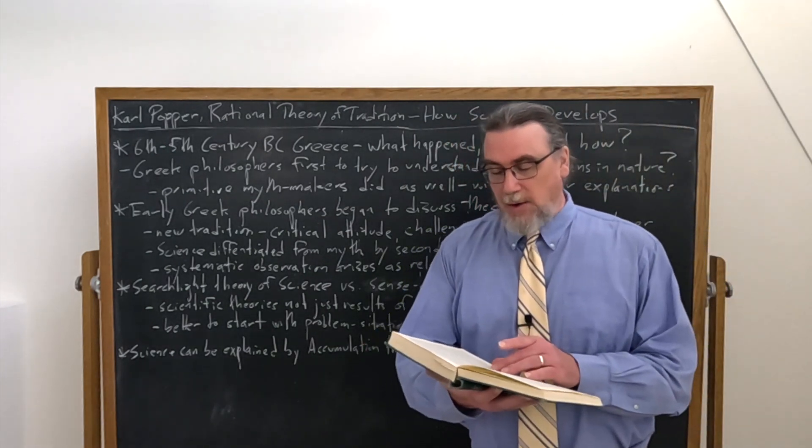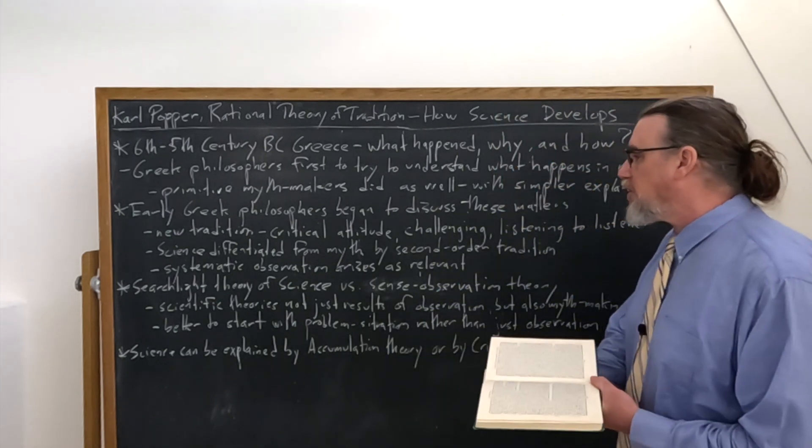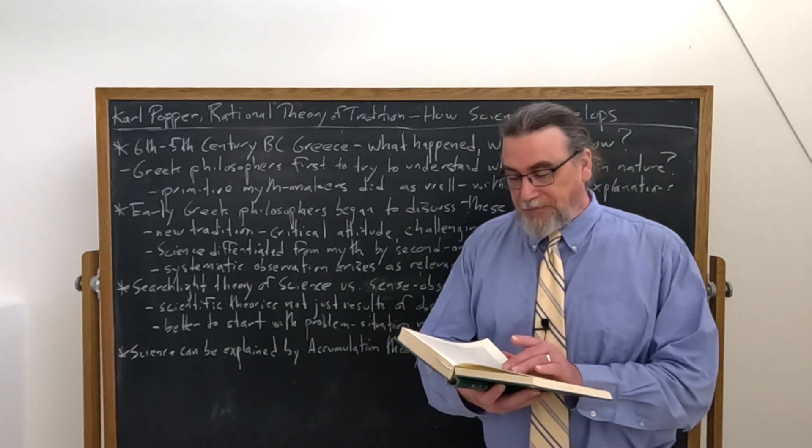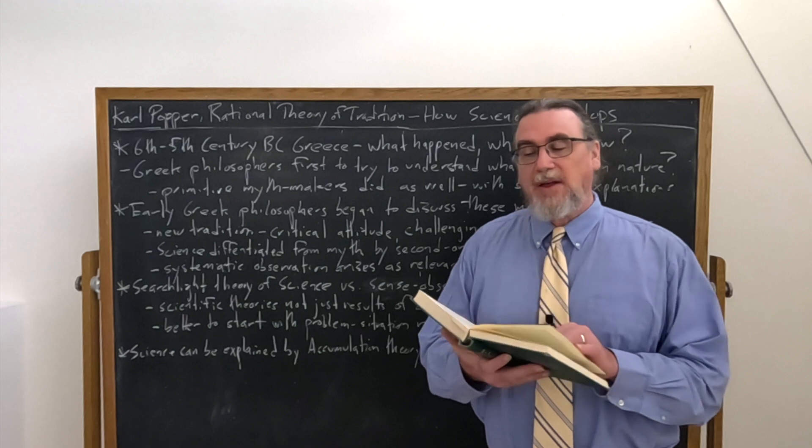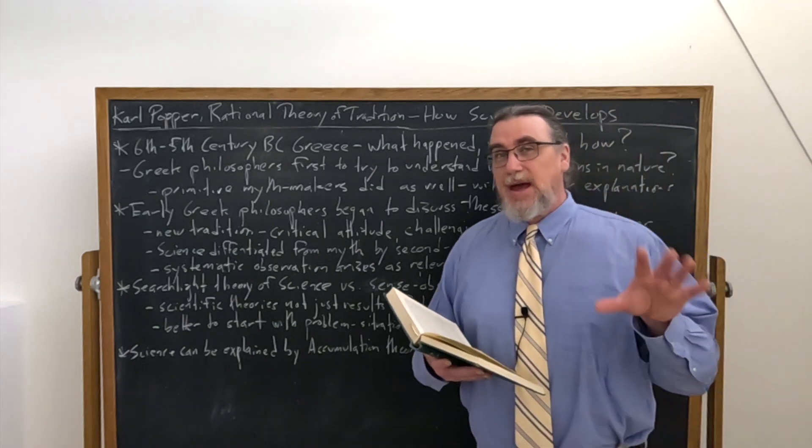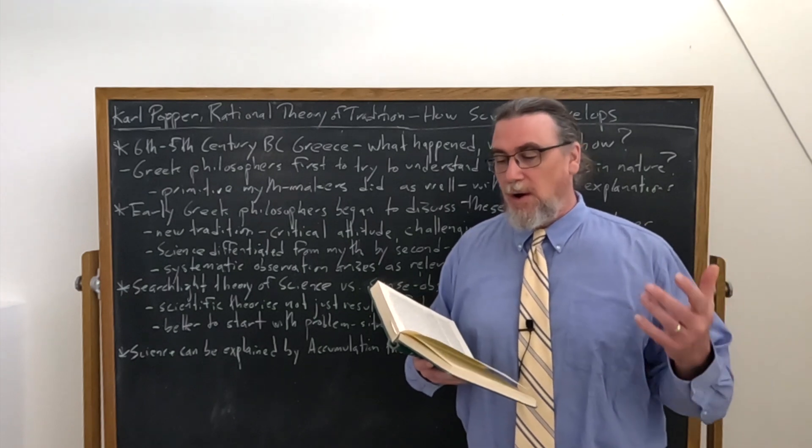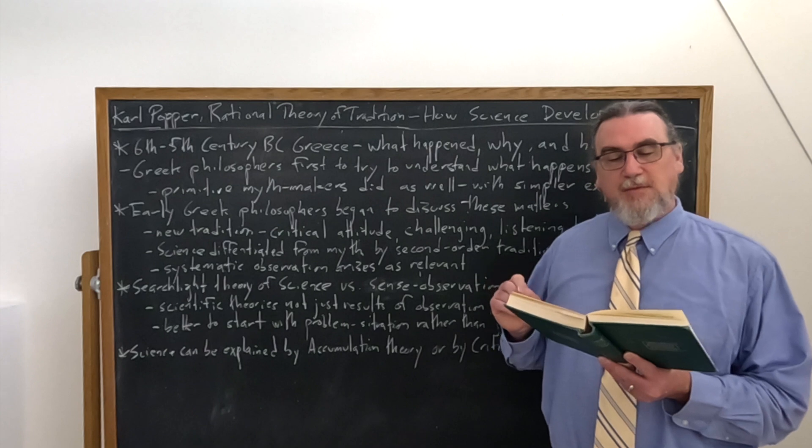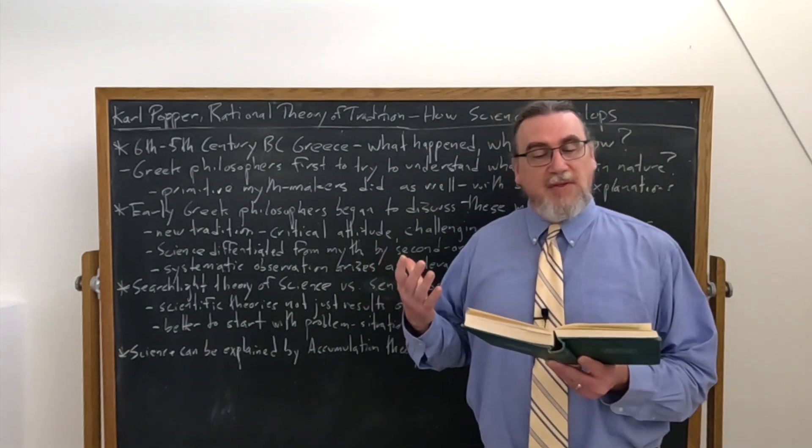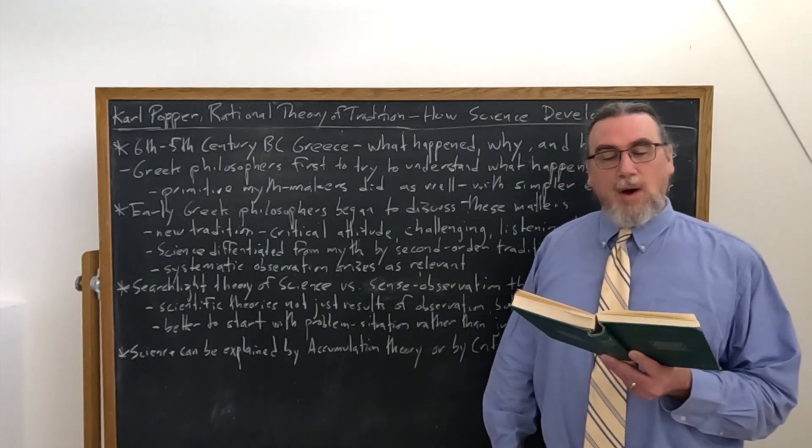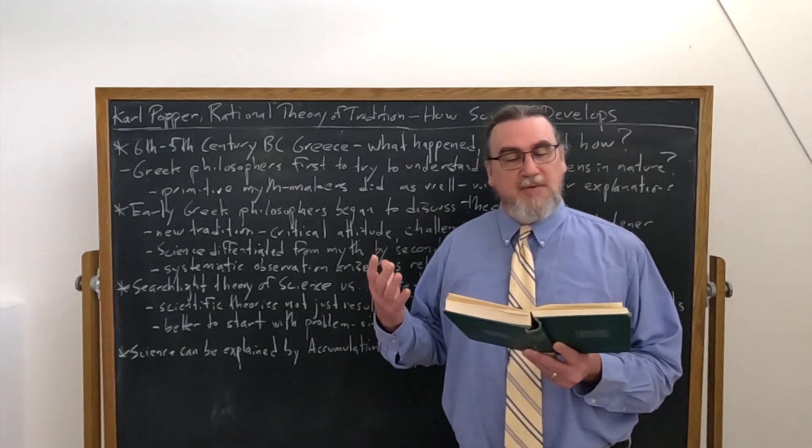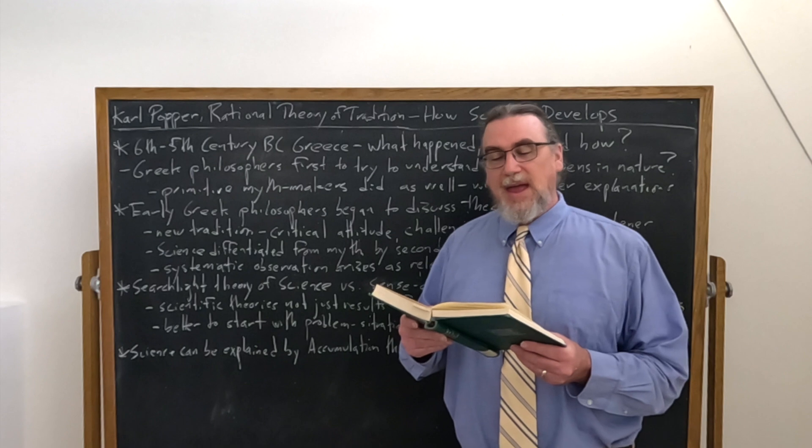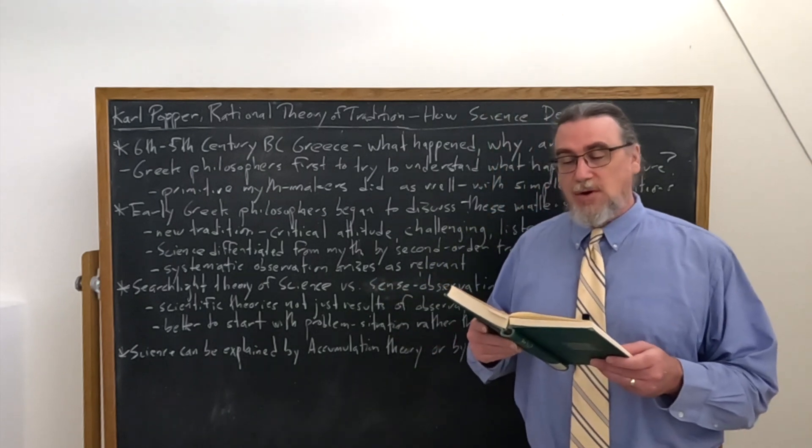Popper's going to say, in the critical discussions which now arose, there also arose for the first time something like systematic observation. Why? So they can take these accounts that have been developed and say, do they actually seem to line up with what it is that we observe? It is the myth or the theory which leads to and guides our systematic observations, observations undertaken with the intention of probing into the truth of the theory or the myth. So we don't just start with observations first. We have to have theories already. Then we can begin to systematically observe.